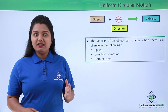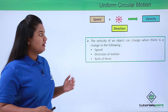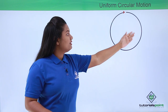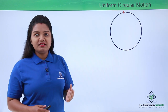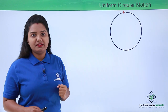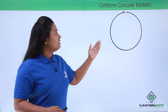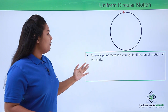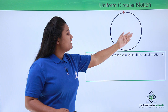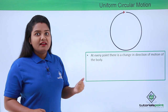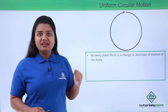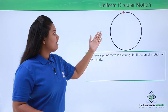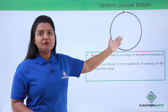In uniform circular motion, a body moves along a circular path with a constant speed, or constant magnitude of velocity. At every point along this path, the body has been changing its direction. Since it is uniform circular motion, the speed remains constant throughout, but the direction of motion changes at every point.